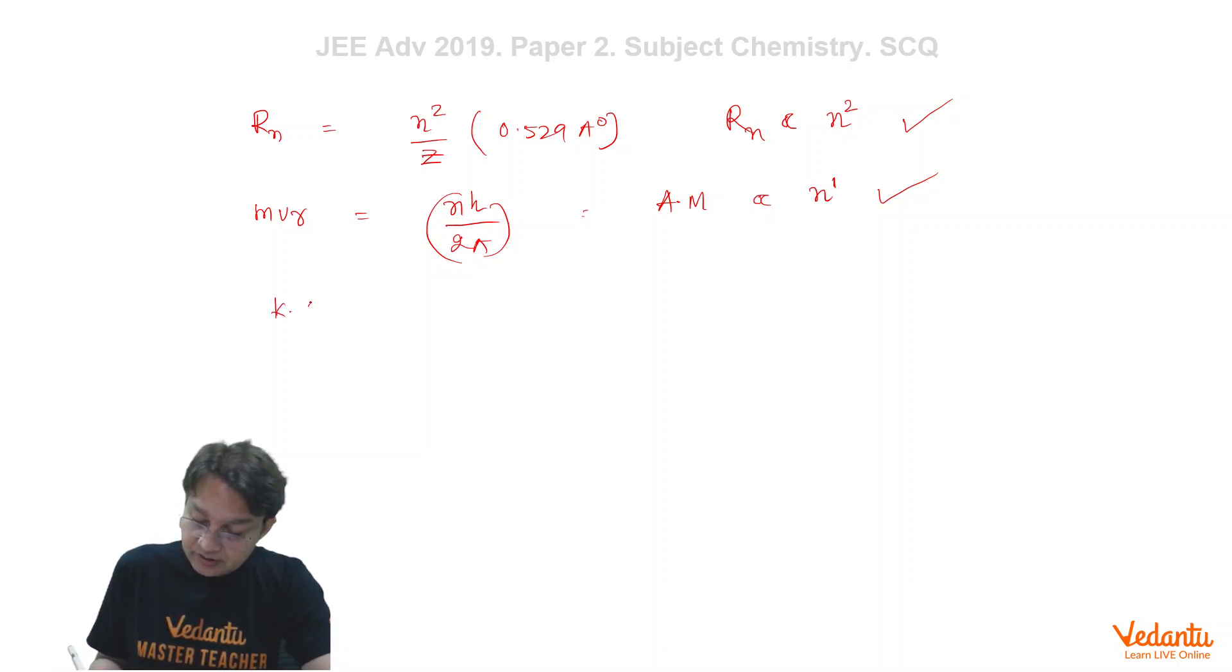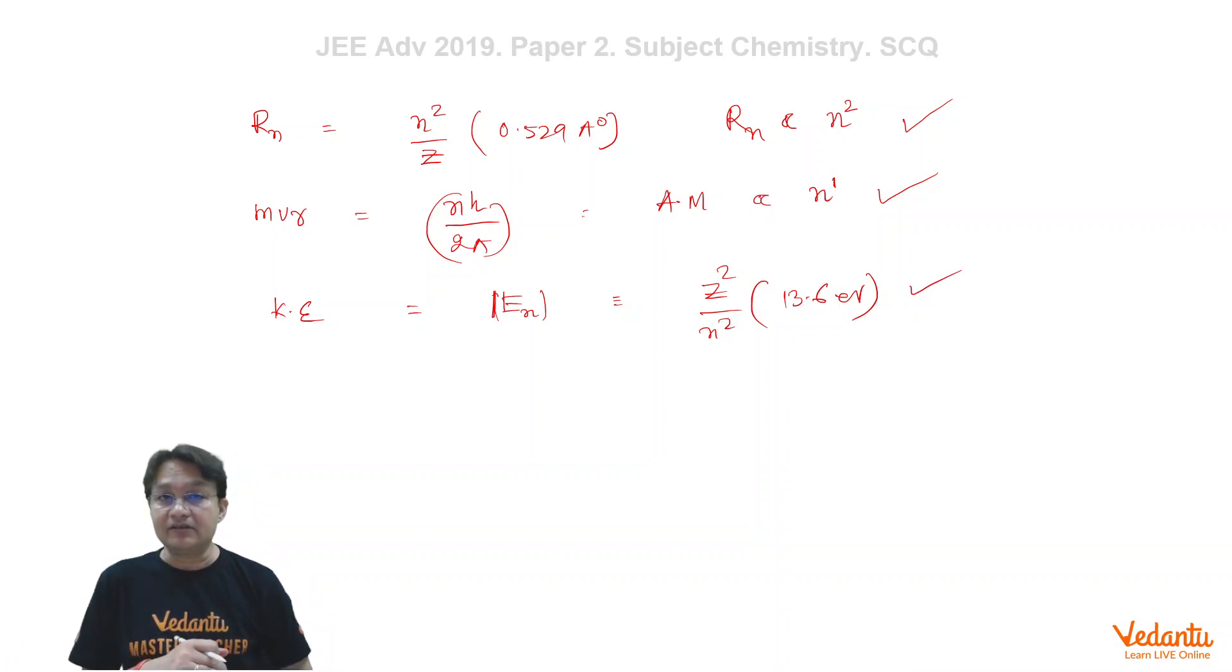Thirdly the kinetic energy. Now kinetic energy in the Bohr's model, if you remember, if you have gone through it thoroughly, then kinetic energy is equal to the magnitude of energy En. And we know that the expression of En contains Z square upon n square multiplied by 13.6 electron volt. So this is kinetic energy and indeed kinetic energy is inversely proportional to n square.